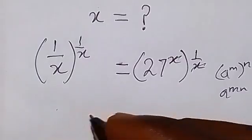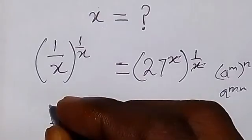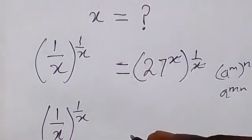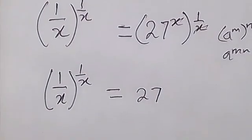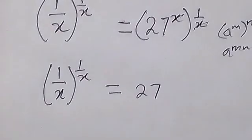Then we then have 1 over x raised to power 1 over x equals 27 here. And also 27 can be expressed as 3 raised to power 3.